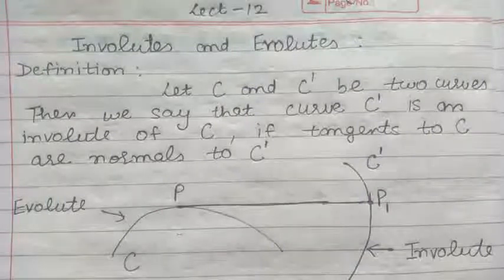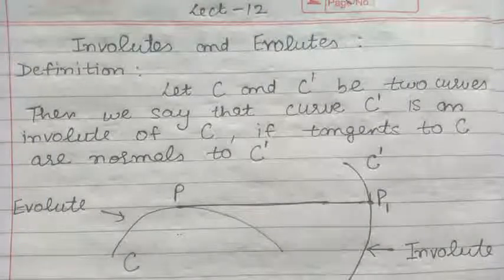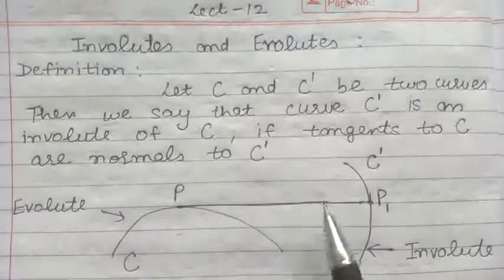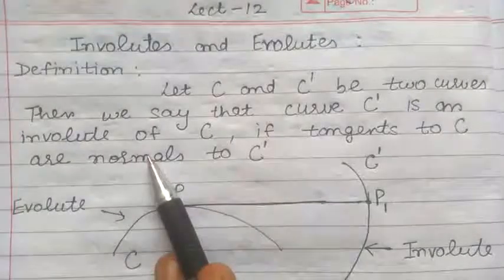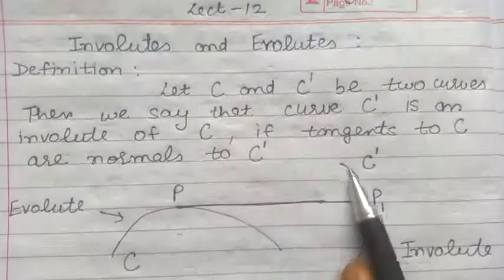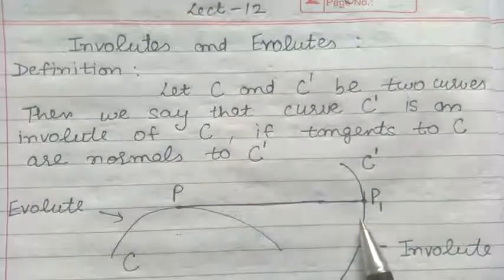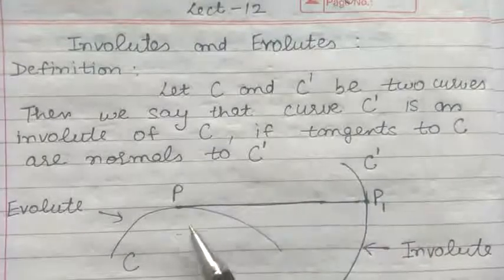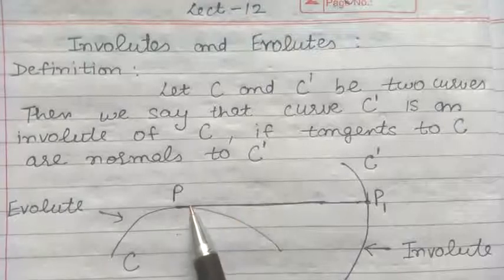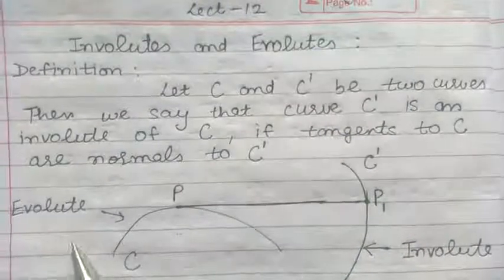Good morning students, today we will start Unit 2 of differential geometry, and the first topic is involutes and evolutes. To define involute and evolute, let us take two curves: the first curve is C and the second curve is C dash. We say that the curve C dash is the involute of the curve C if the tangent to C is normal to the curve C dash.